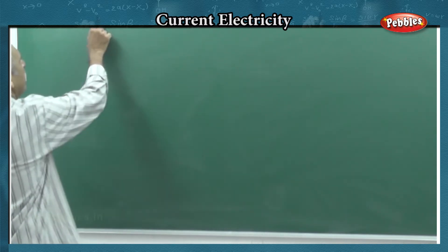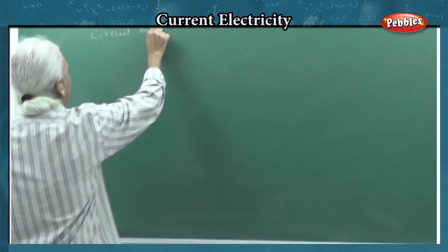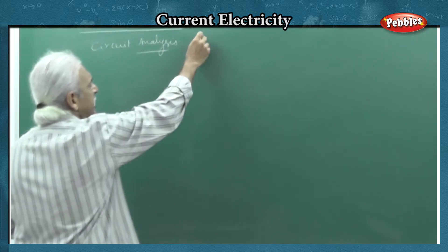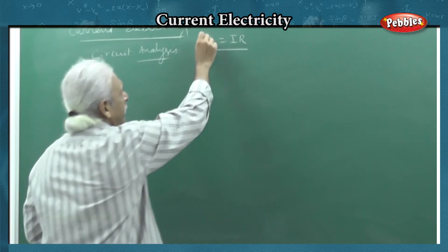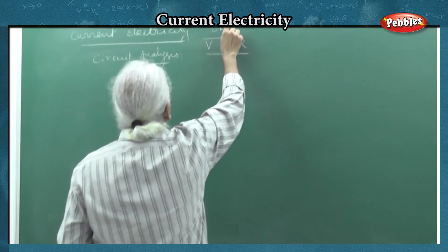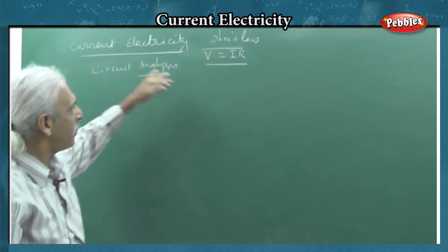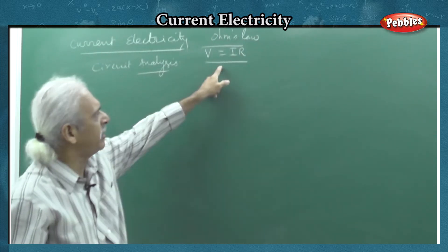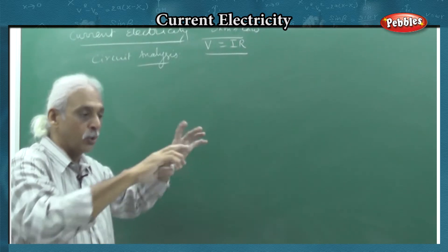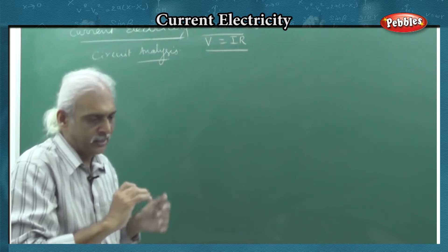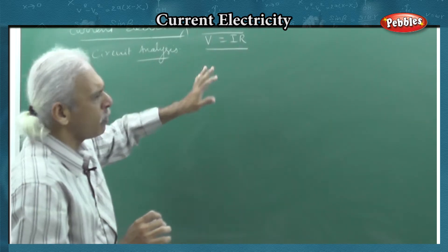This circuit analysis is what we are going to learn. The basic idea is Ohm's law: V is equal to IR. Ohm's law is applied to the circuit. If there is any branch, we can apply it. Many branches will be there in the circuit — some circuit branches will be closed circuit, some open circuit. Ohm's law is applied to each branch.